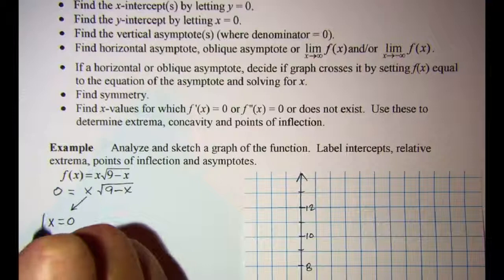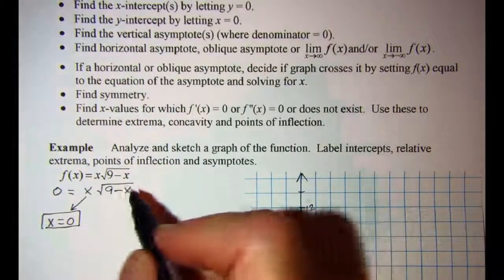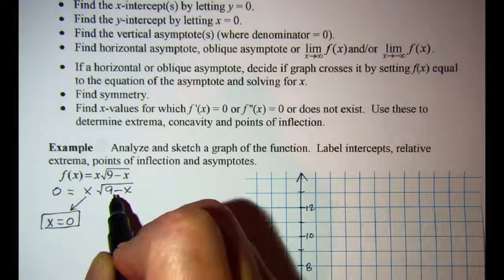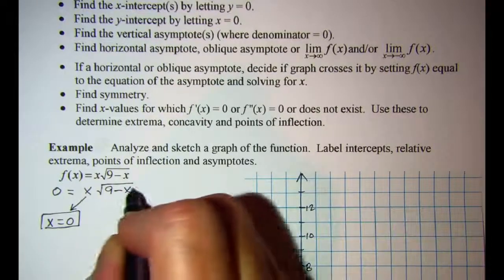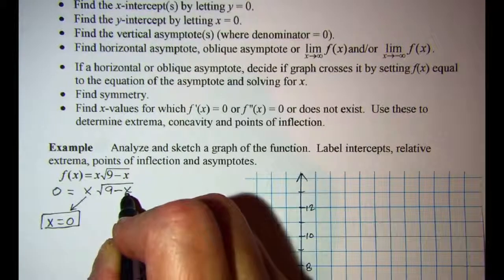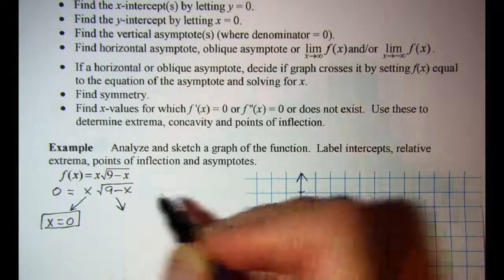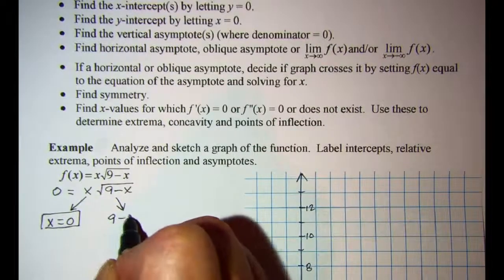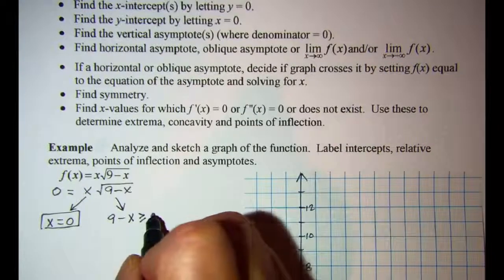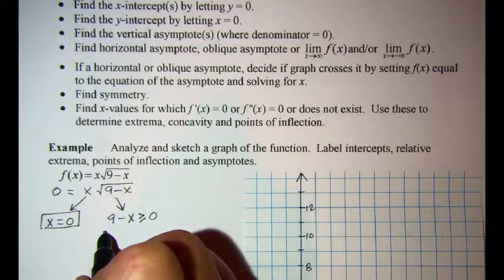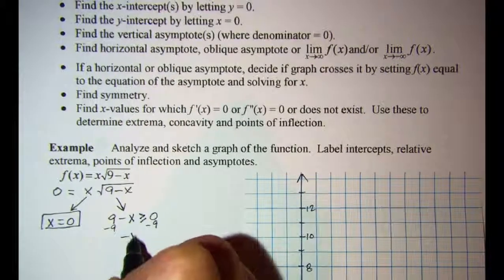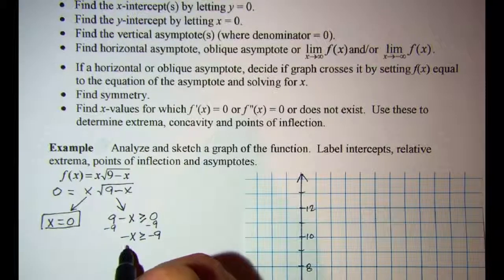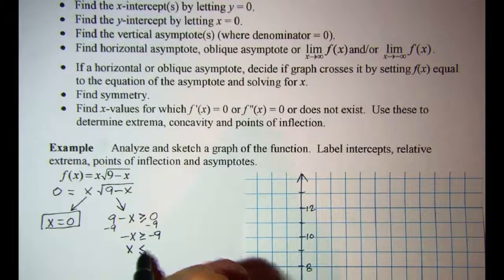So that gives us x equals 0 and then we also can find our domain of our function by stating that 9 minus x has to be greater than or equal to 0. So that will give us our 0 and our domain. 9 minus x has to be greater than or equal to 0. Subtract 9 from both sides. So negative x is greater than or equal to negative 9. Divide both sides by negative 1. So x is less than or equal to 9.